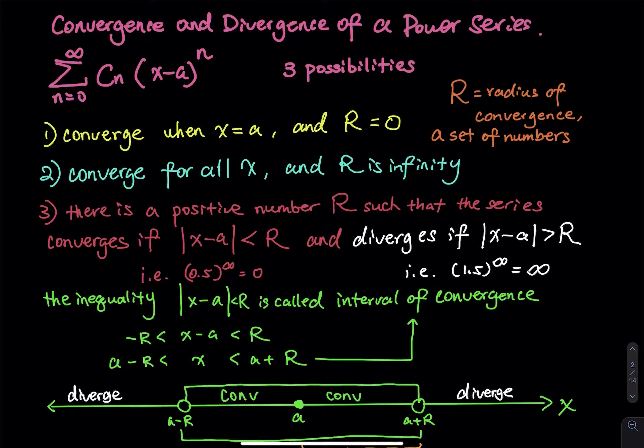Alright, so there are three cases. To be honest, case one and case two are pretty rare. You don't really encounter them a lot. Case one is when the series converges when x equals a, and the radius of convergence R equals zero.